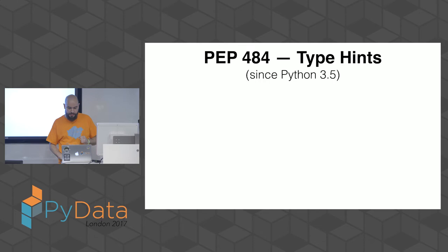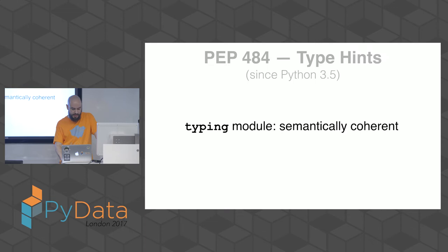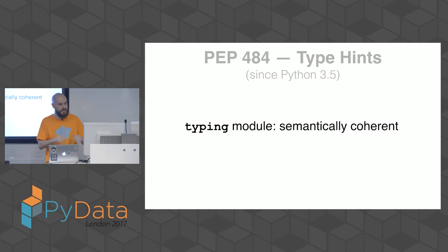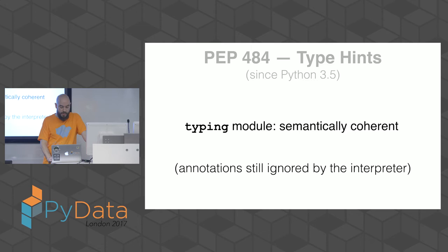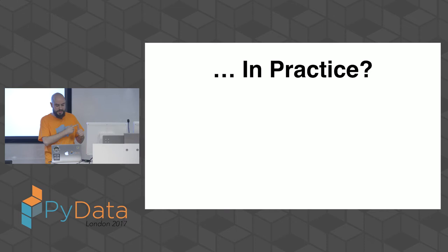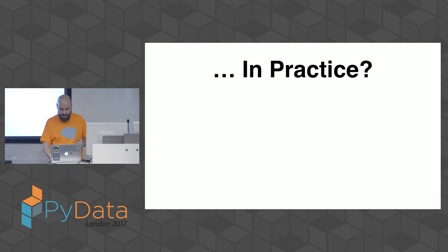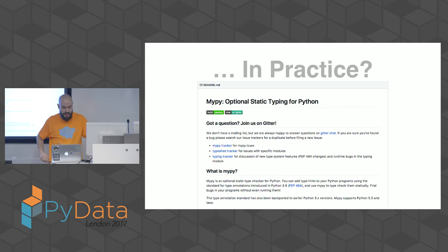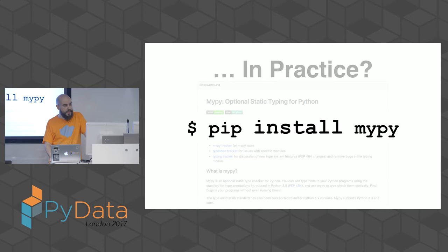More recently, in Python 3.5, the typing module was introduced, making the typing system more semantically coherent with many abstract data types. But again, annotations are still ignored by the interpreter. In practice, you need an external tool to perform static analysis, and for Python that tool is mypy — 'optional static typing for Python.' You install it with pip install mypy.